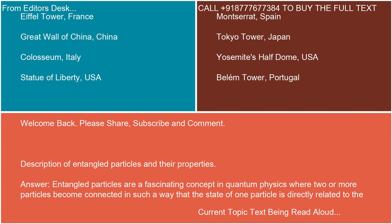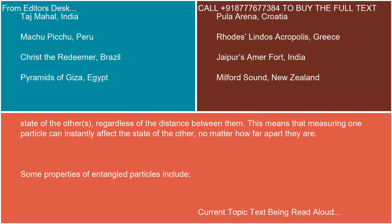Entangled particles are a fascinating concept in quantum physics where two or more particles become connected in such a way that the state of one particle is directly related to the state of the others, regardless of the distance between them. This means that measuring one particle can instantly affect the state of the other, no matter how far apart they are.